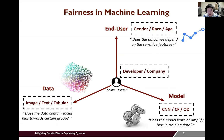Here I give you a bird's-eye view of the important components in the machine learning pipeline. From the data perspective, during the data collection process, our question would be: does the data contain social bias towards certain groups? From the model perspective, we need to verify whether the model learns or amplifies bias in the training data.